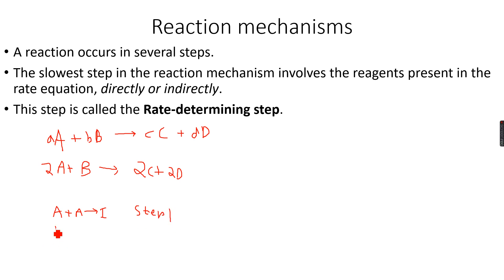And then in the second step, I, which was the intermediate form, reacts with B to give C and D. So, this is step 2.